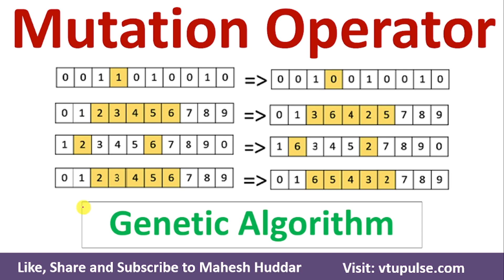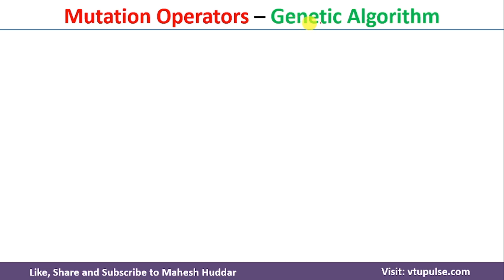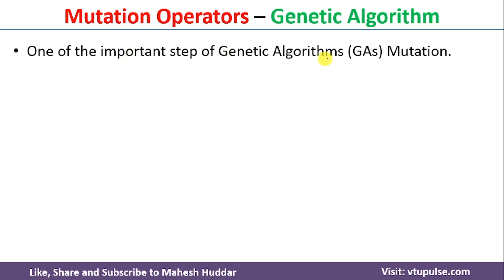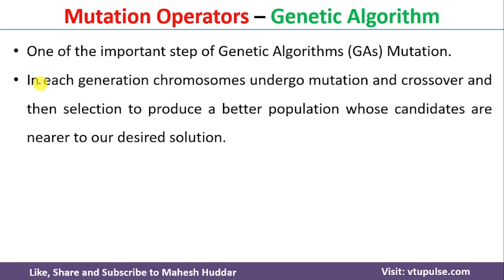Welcome back. In this video, I will discuss different mutation operators in genetic algorithm. In the previous video, I discussed what genetic algorithm is and how it works with a simple numerical example. One of the most important steps in genetic algorithm is mutation. In each generation, chromosomes undergo mutation, crossover, and selection to produce a better population whose candidates are near to our desired solution. In this video, we will discuss the different mutation operators available in genetic algorithm and how they work with simple numerical examples.